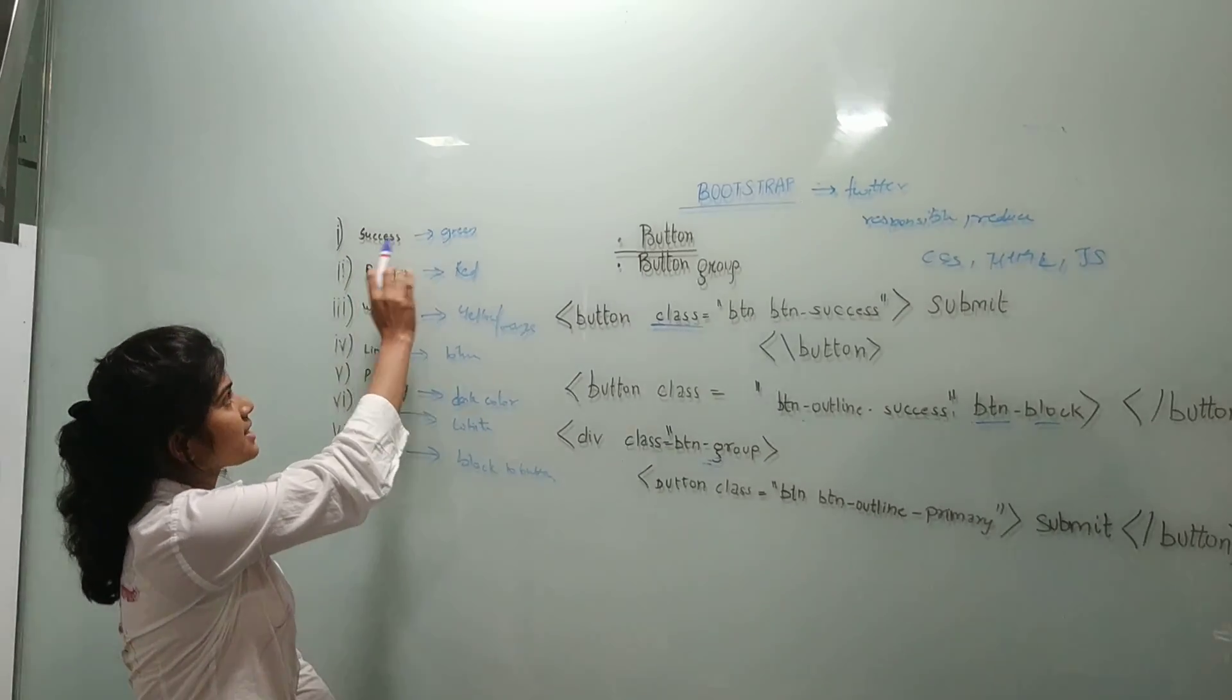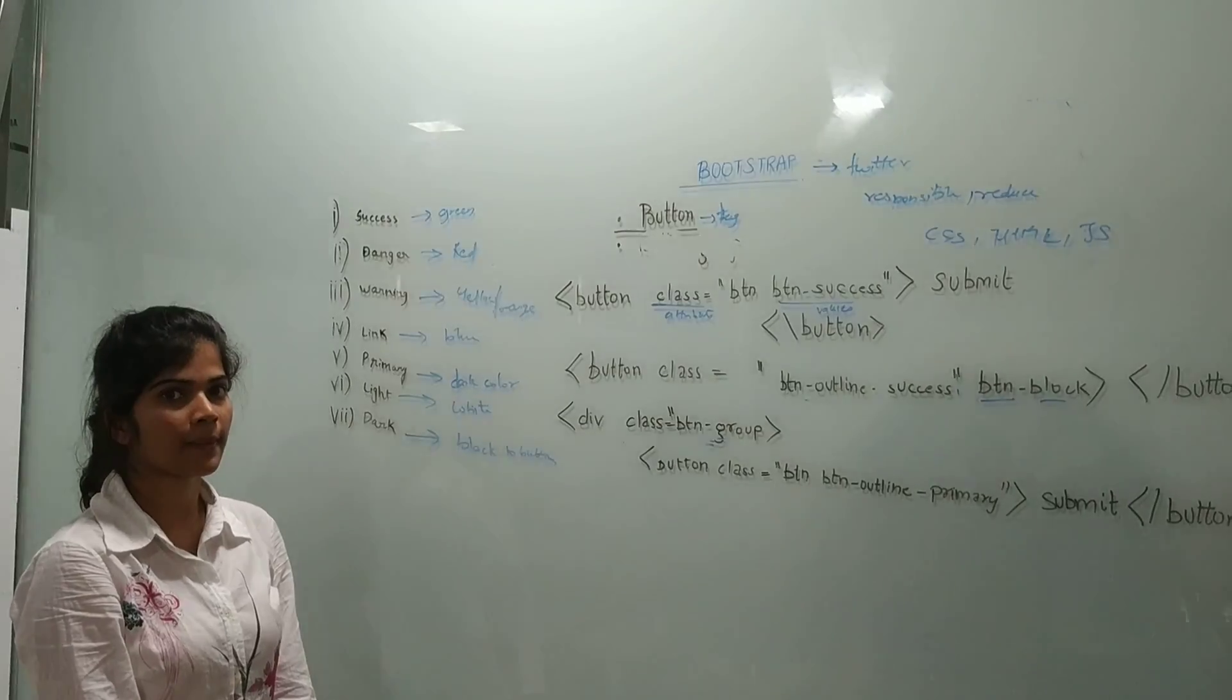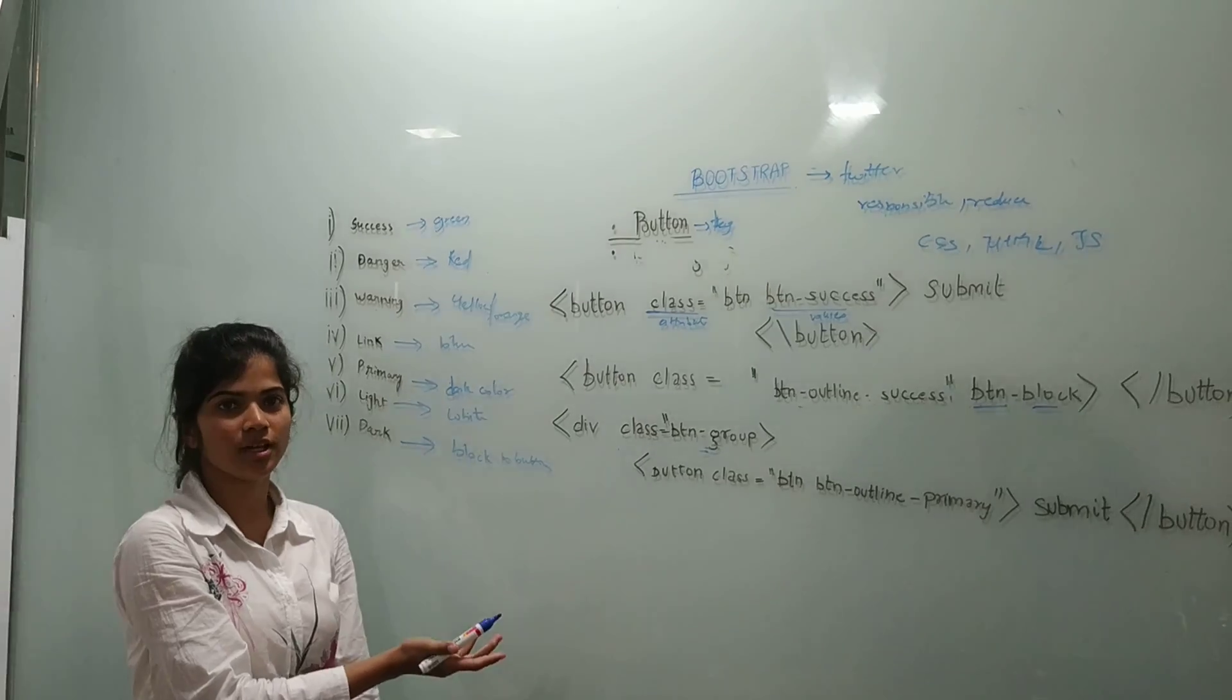For example, for success it is green, for danger it is red, for warning it is yellow. Each one will have different colors.